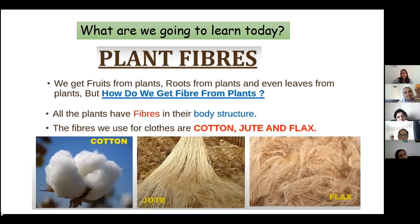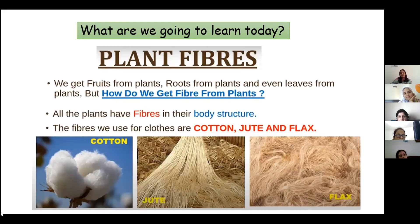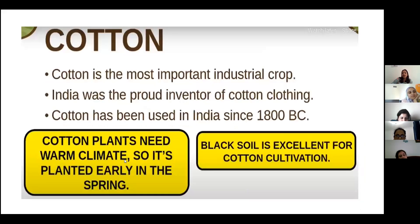Silkworms eat leaves, and from that process they make silk threads. So silk comes from an animal, the caterpillar. Thank you. So we are learning about the plant fibers: cotton, jute, and flax.